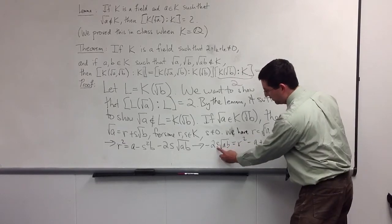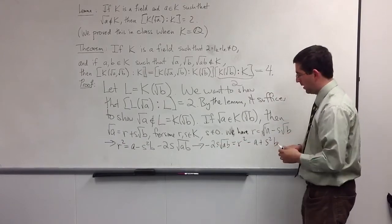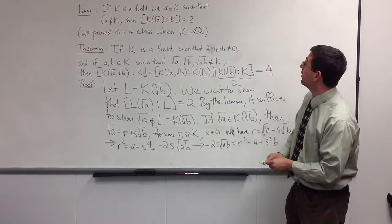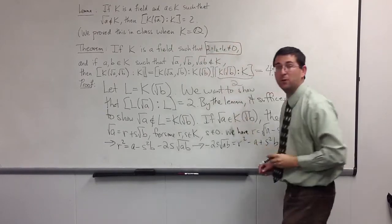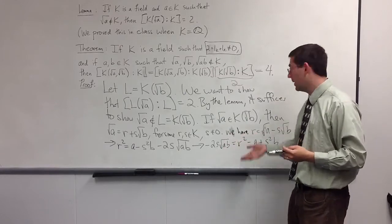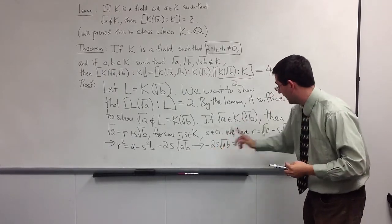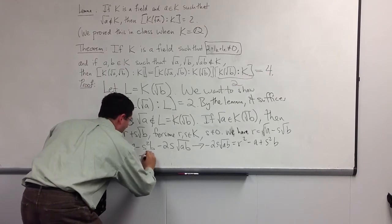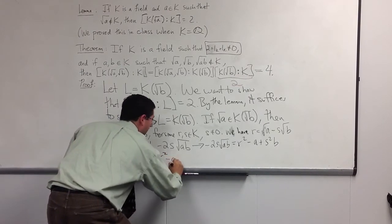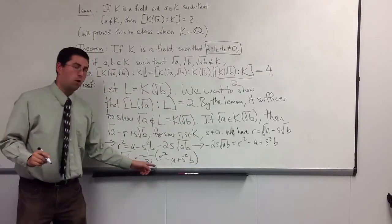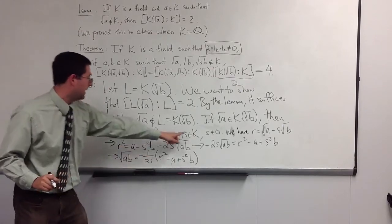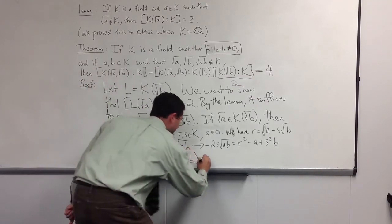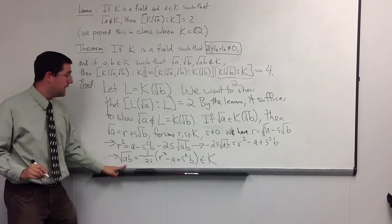Since s ≠ 0, we can divide by s. We can also divide by −1, and we would love to divide by 2 — that's where we need the assumption that 2 ≠ 0. Since 2 ≠ 0 by assumption, we're allowed to divide by −2s, giving: √(ab) = (−1/2s)(r² − a + s²b). Now r, s, a, and b all come from k, so this entire expression lives in k, which means √(ab) ∈ k.